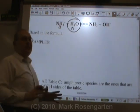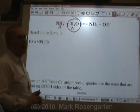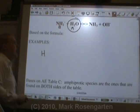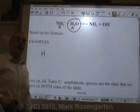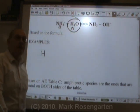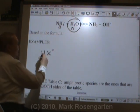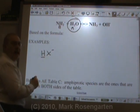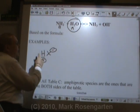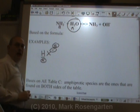If you want to identify amphiprotic substances based on the formula, it's really simple. Because acids must contain H, and in order to pick up H+, the ion in question must have a negative charge. So if the formula has H and a negative charge, it can act as an acid by losing that hydrogen or as a base by picking up hydrogen.